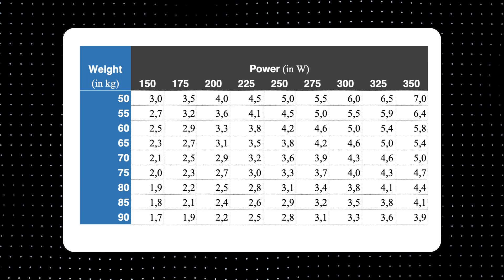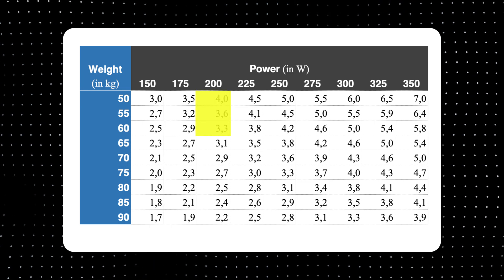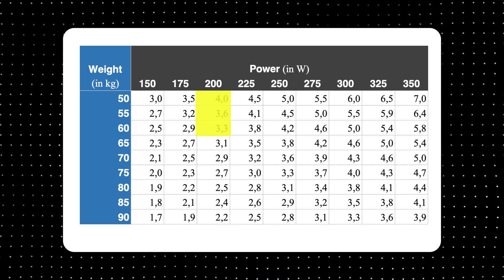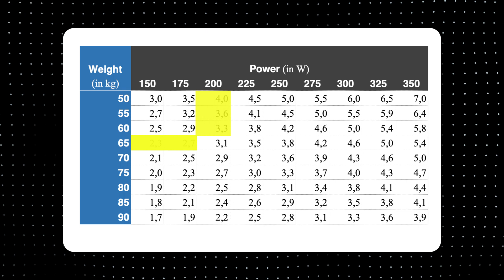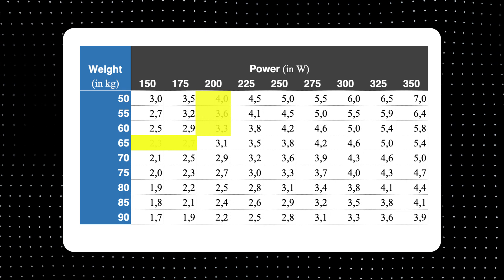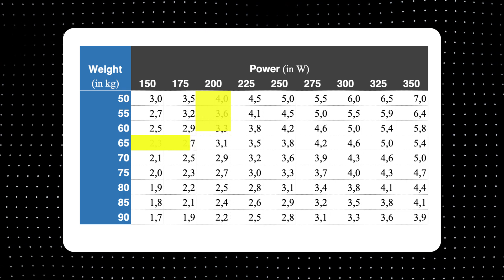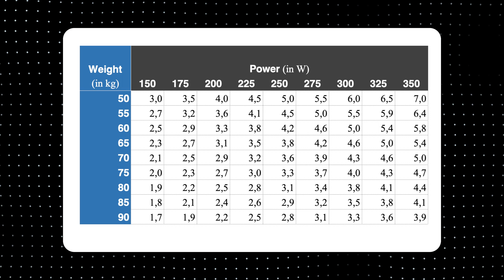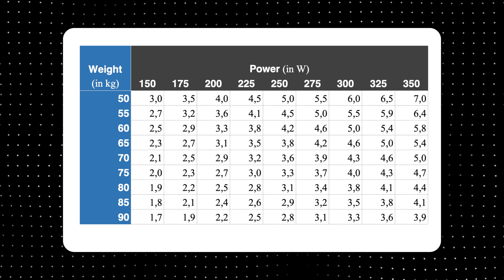To calculate your power to weight ratio is very easy. All you need is your FTP value and weight. Divide power by weight and you'll get your power to weight ratio. For example, if your FTP is 200 watts and your weight is 65 kilograms, your power to weight ratio is 3.1. For other FTP and weight values, I made a chart with a sample range.